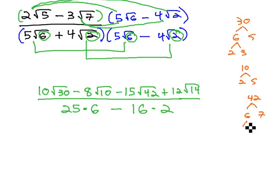42 is 6 times 7, and 6 is 2 times 3. No pairs there that can come out of the radical. And 14 is 2 times 7. No pairs there that can come out of the radical. So, the numerator can't simplify at all.